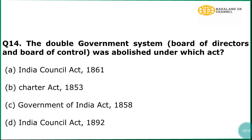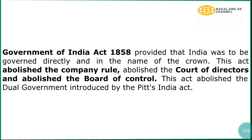Question number 14: The double government system — Board of Territories and Board of Control — was abolished under which act? In explanation, the Government of India Act 1858 provided that India was to be governed directly and in the name of the Crown. This act abolished the company rule, abolished the Court of Directors, and abolished the Board of Control. This act also abolished the dual government introduced by the Pitt's India Act.